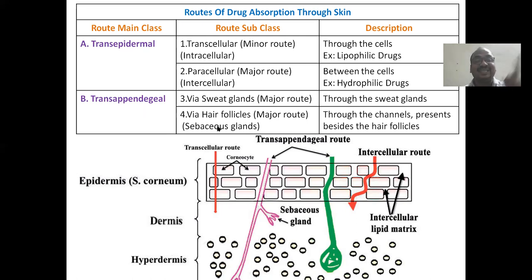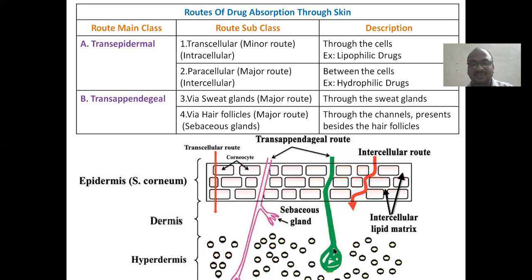The second main route is trans-appendiceal — through appendages (holes/openings) like hair follicles and sebaceous glands. Along the sides of the hair there is a small hole through which the drug is transported. Another pathway is via sweat glands. Don't confuse the sebaceous gland (which secretes sebum, a gum-like structure) with the sweat gland, which secretes a water-like material from the skin.